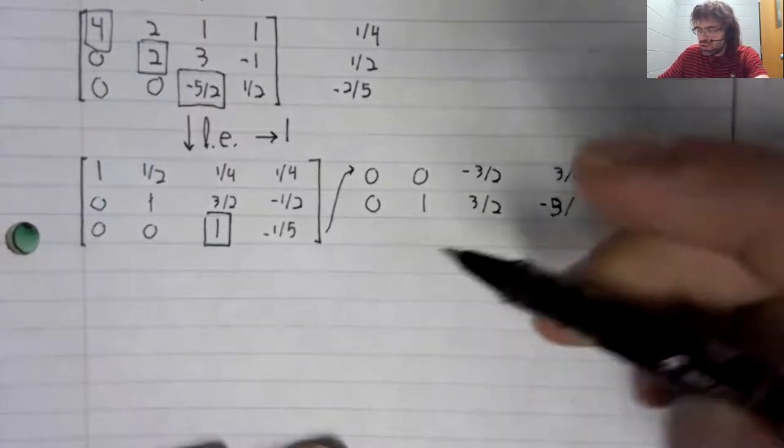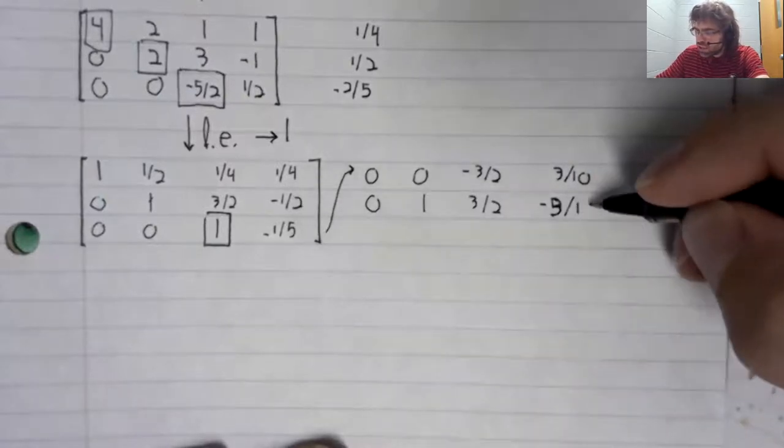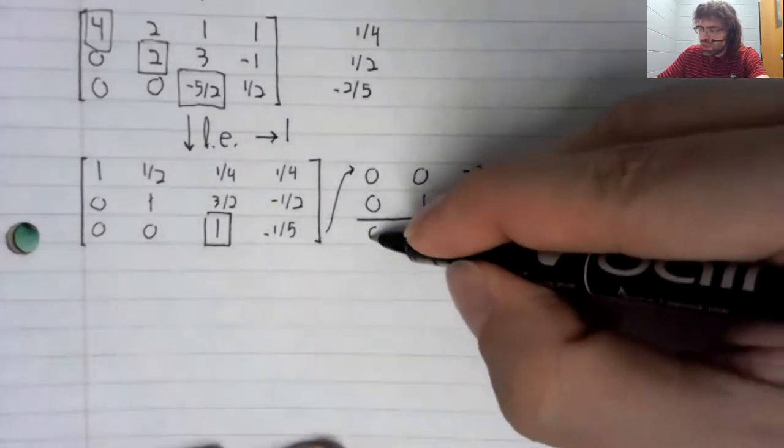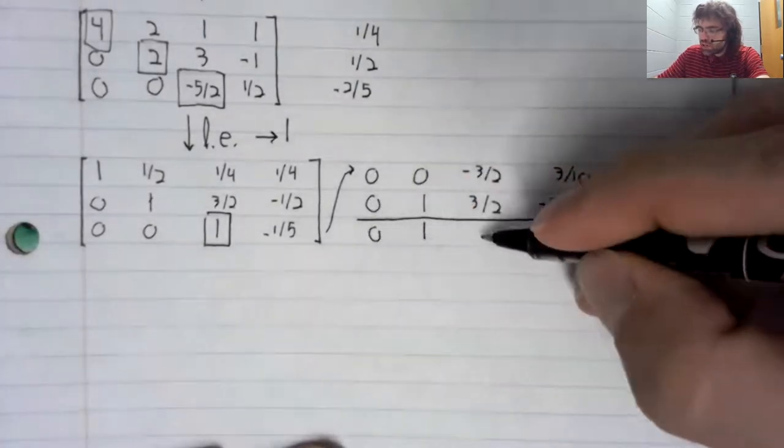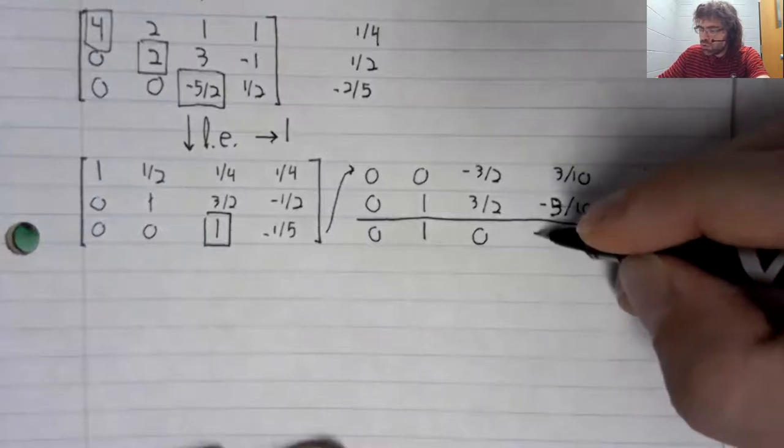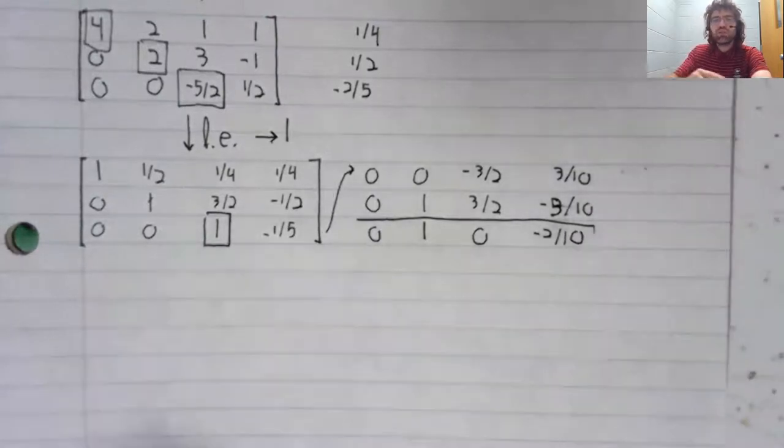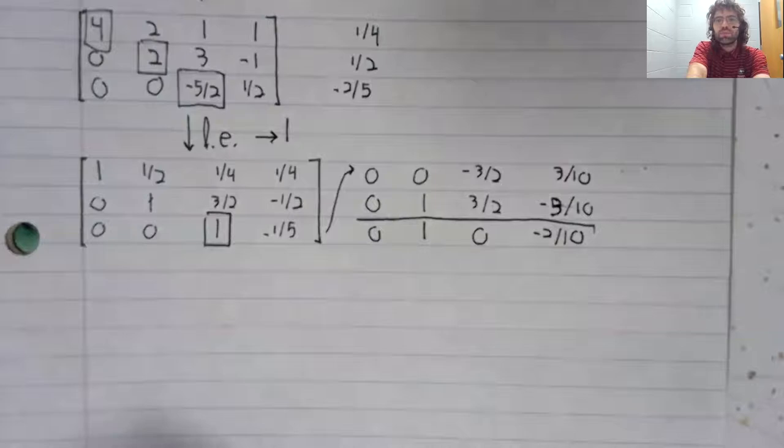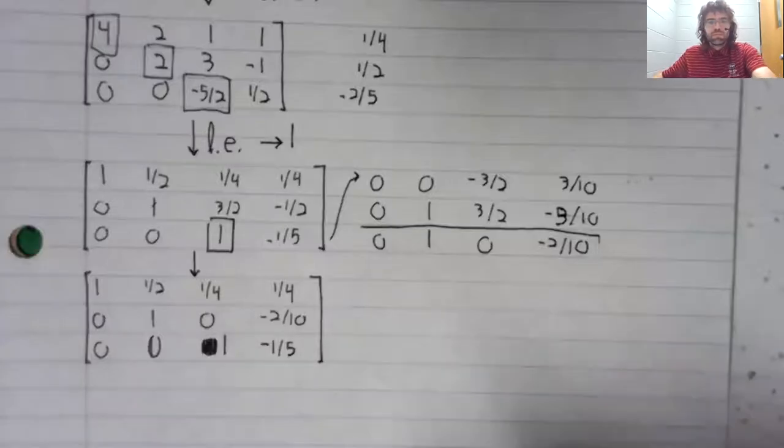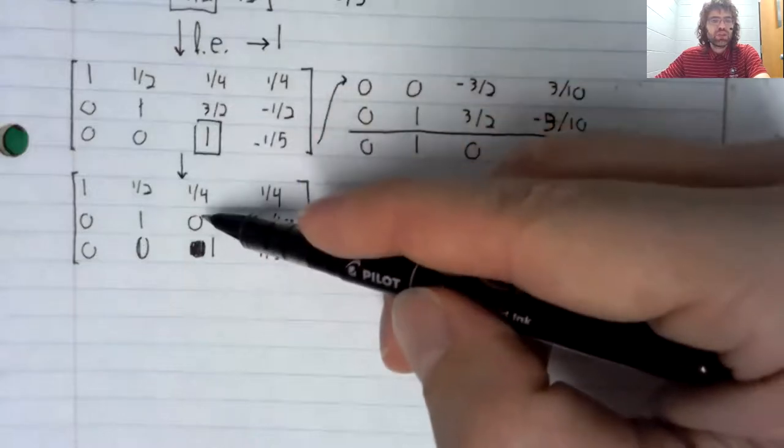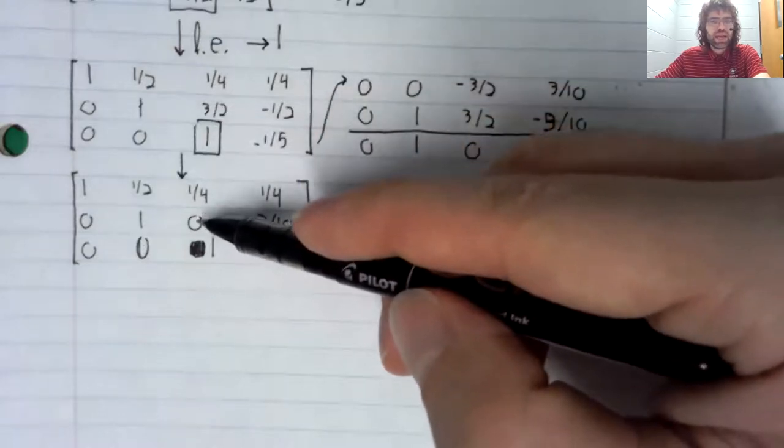Let me see. Negative one-half is negative five-tenths. And we'll get our new second row. We wanted to turn this three-halves to zero and we have.